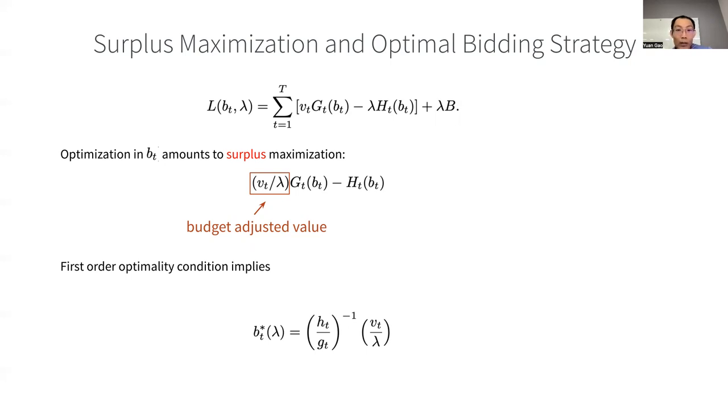So the first-order optimality condition can give us an explicit formula for the optimal bidding strategy. So in this formula here, the small gt and ht are derivatives of the big G and h, and the inverse here means function inverse.